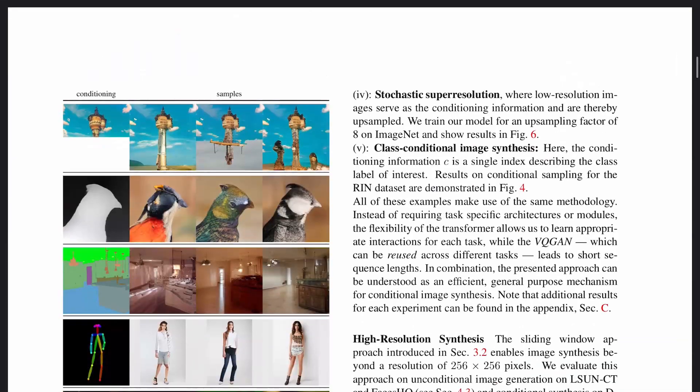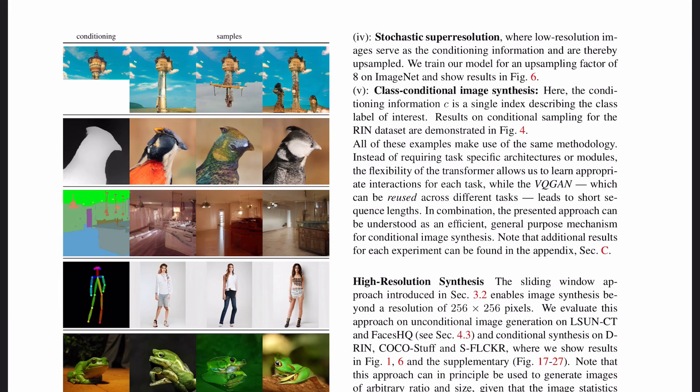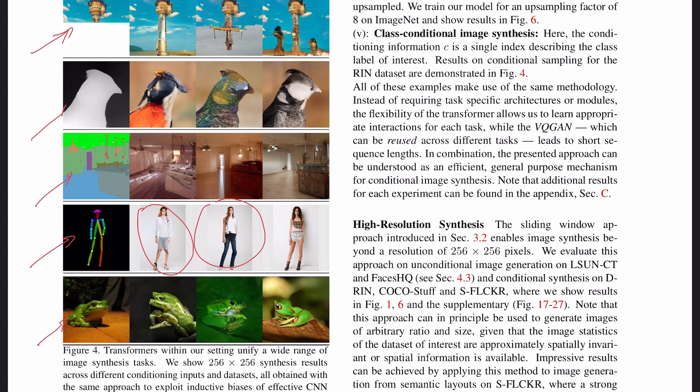There are a lot of other ablations and experiments, and the beauty of this method comes with the fact that you can do conditioning of your generation based on many different modalities. For example, you can condition your model with a stickman and ask it to generate a full body picture. Or you can use semantic segmentation and ask the model to generate the original image. Or you can use depth maps, or you can use partial image and ask the model to fill in the gaps. Or you can even take some other image and use it as a condition for generation.